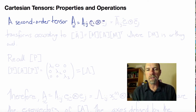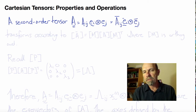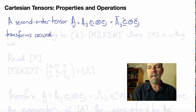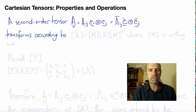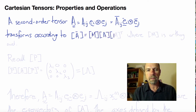To remind you, a second-order tensor A with components A_IJ can be expressed as A_IJ times the unit dyads E_I dyadic E_J. And in a different coordinate frame E_I bar, the components would be A_IJ bar, and we could write the tensor as A_IJ bar, E_I bar dyadic E_J bar.